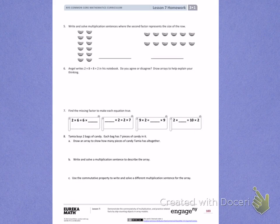This is Module 1, Lesson 7. Today's objective is to demonstrate the commutativity of multiplication and practice related facts by skip-counting objects in array models.